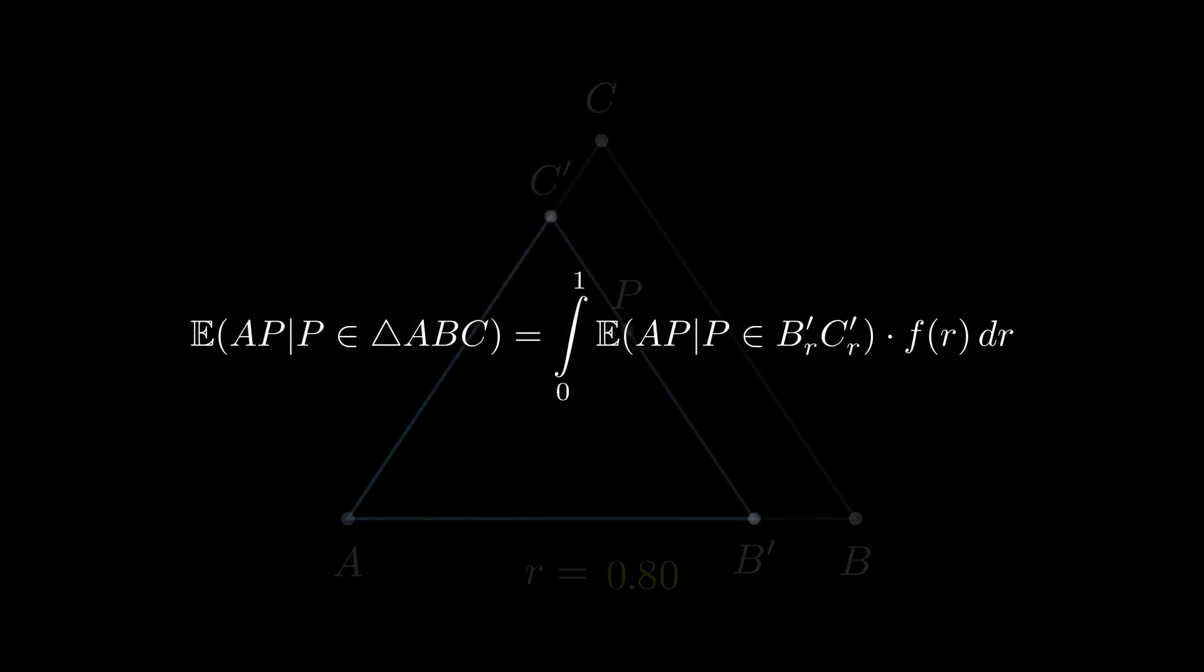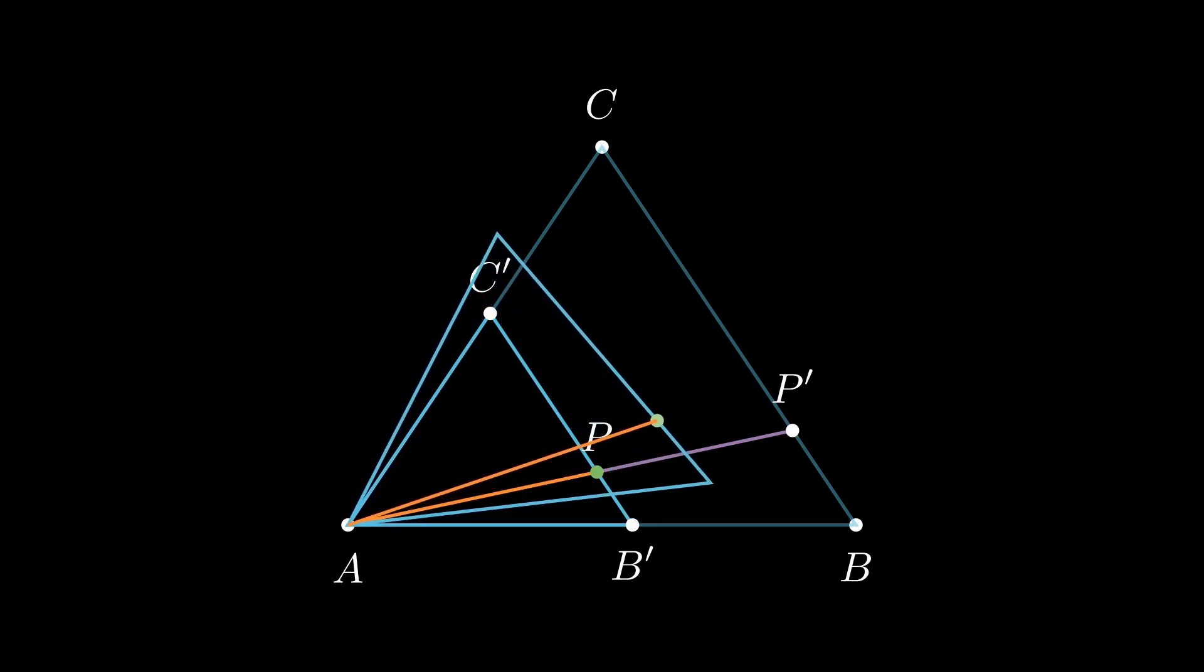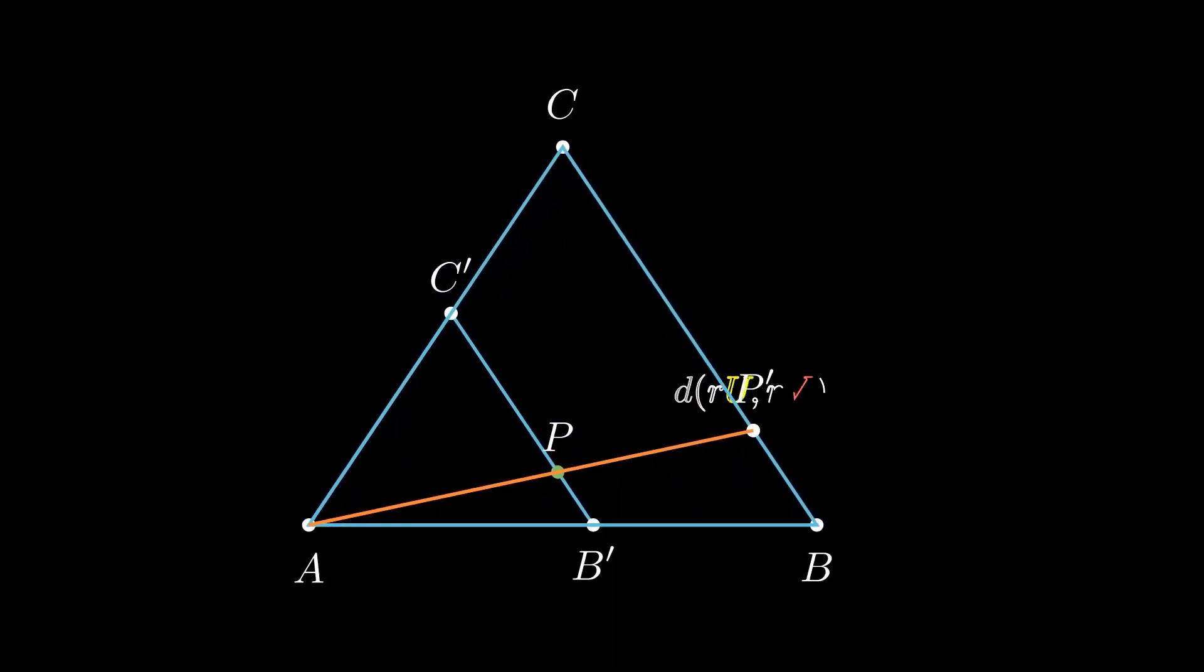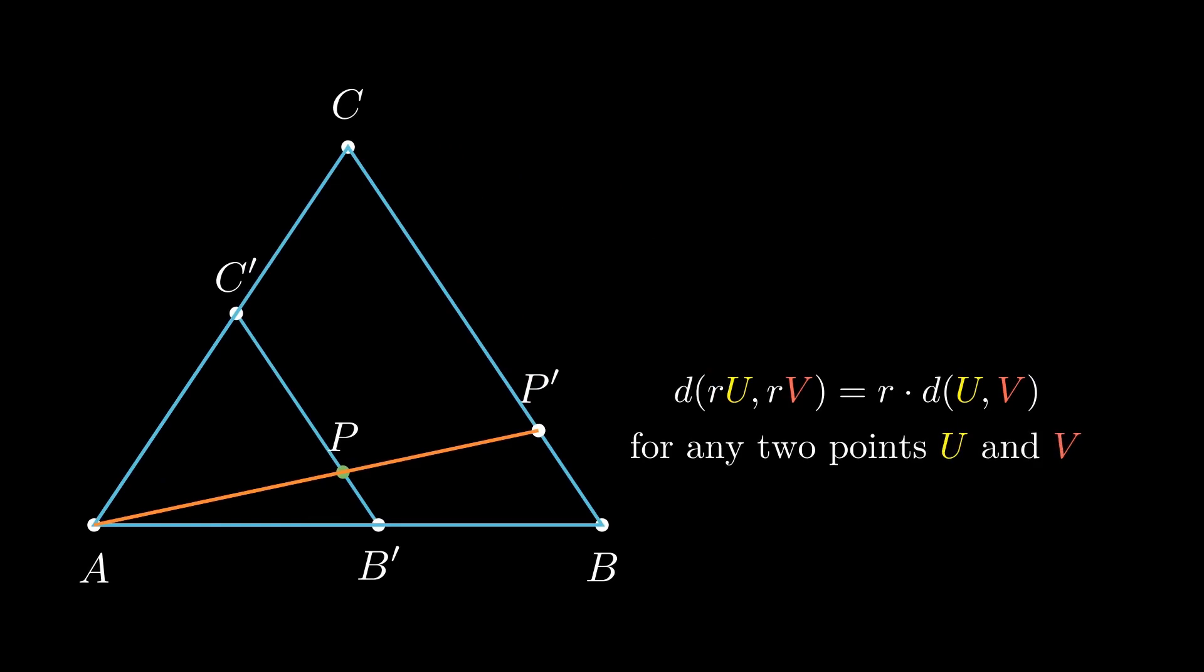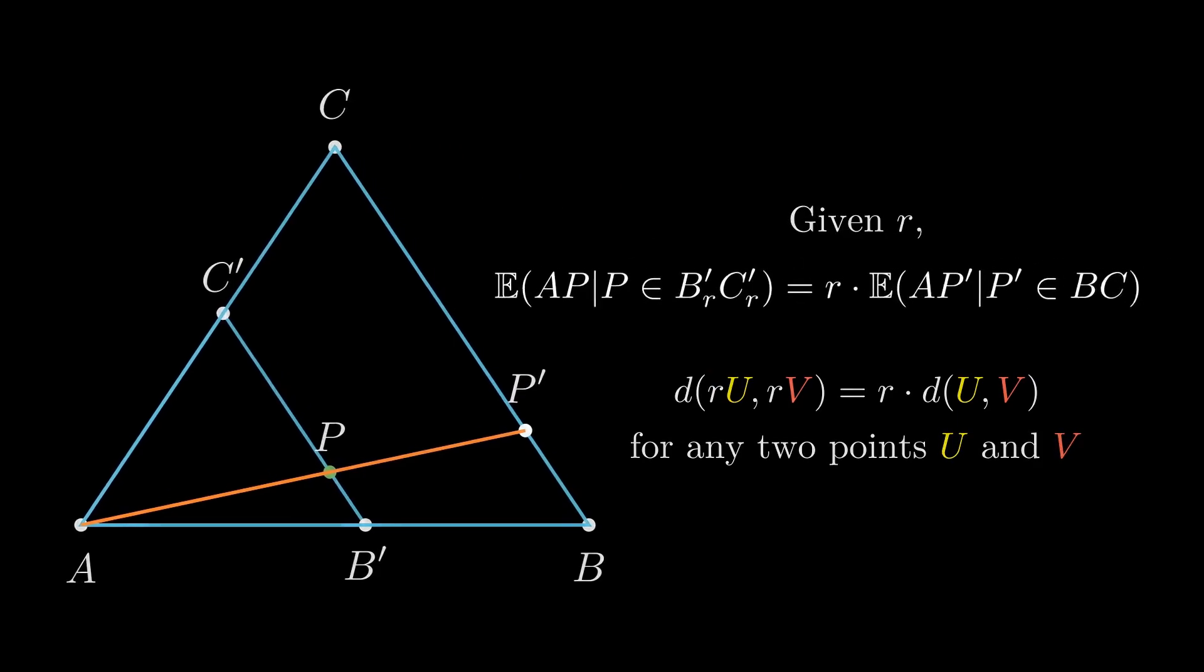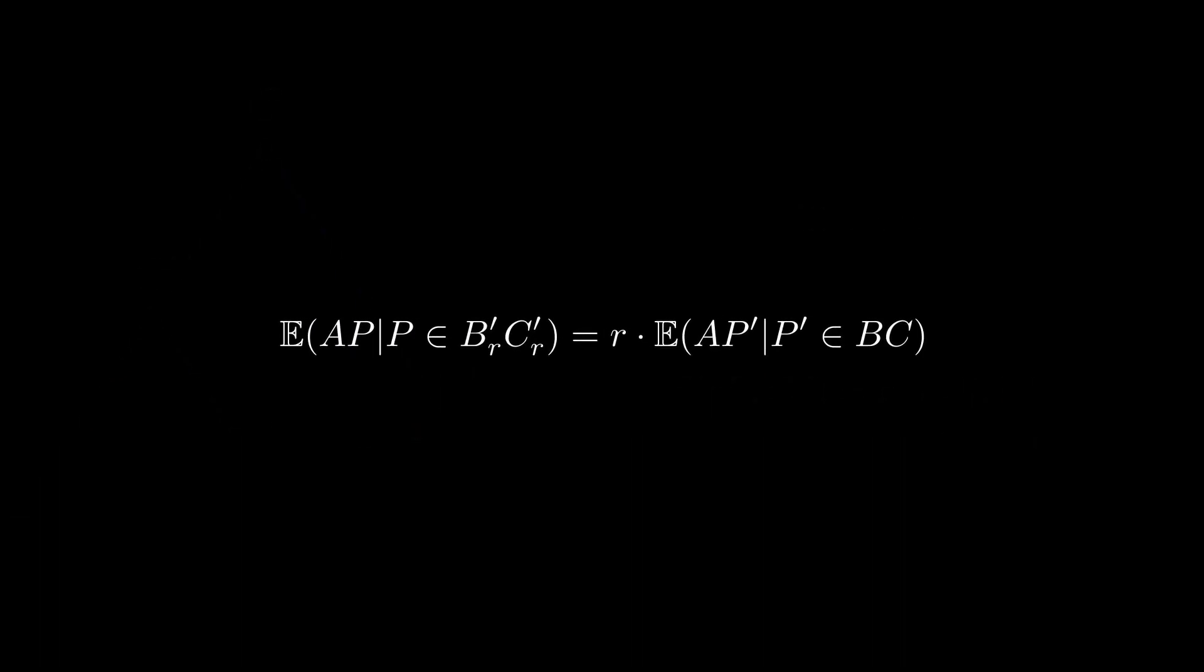We now take full advantage of the geometry of the problem. We can now unscale triangle AB'C' by the same scaling factor so that the segment AP scales to a new segment AP' with P' on side BC. Because scaling is a transformation that shrinks or stretches all distance by the same scaling factor, it is evident that the expected value of AP given P lies on side B'C' is R times the expected length of AP' given P' lies on side BC.